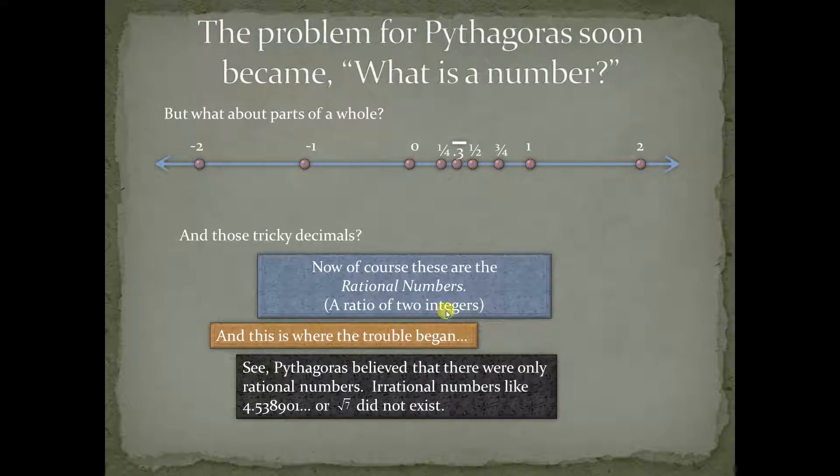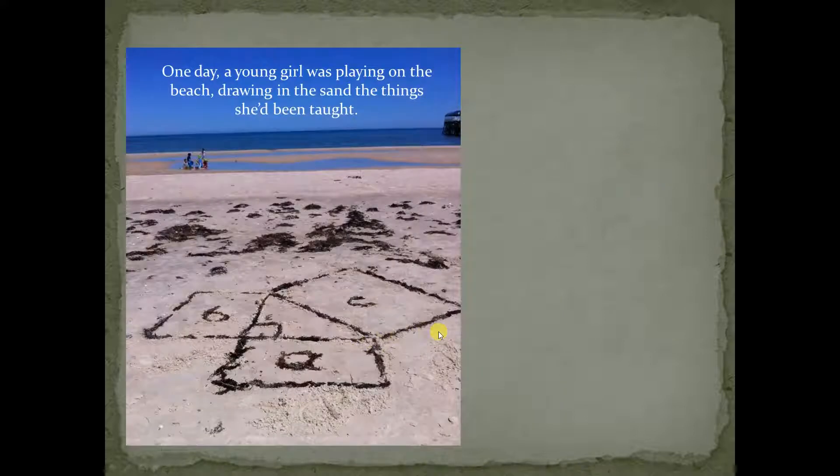This is where the trouble began because Pythagoras didn't believe that what we know now are called irrational numbers existed. And what you're going to see in this class in the very near future, irrational numbers still cause us trouble today. They are confusing and they are tricky. Let's see how this came to be, where these came from and how it caused problems.